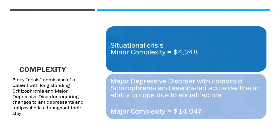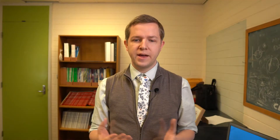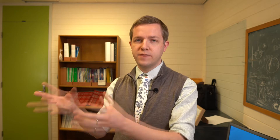Here's an example: a six-day admission for a situational crisis not linked with any other mental health conditions results in minor complexity and only $4,000 worth of funding. For a six-day mental health admission, that's really being underfunded for the amount of care provided. If we reclassify that as a major depressive disorder with comorbid schizophrenia associated with an acute decline in ability to cope due to social factors — linking an acute event with a chronic condition — that goes to major complexity and gives us $14,000 worth of funding, much more likely to cover the care invested in that patient's recovery.